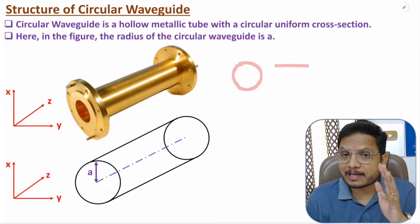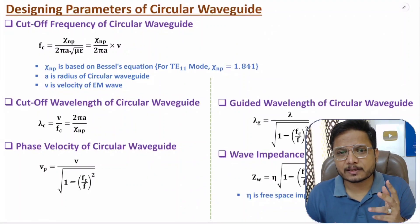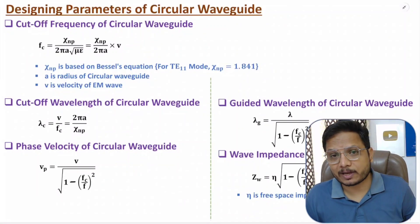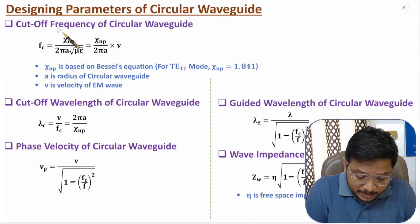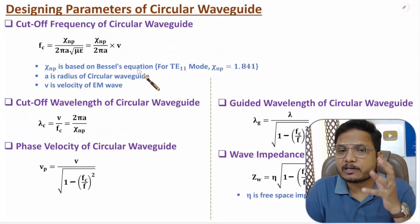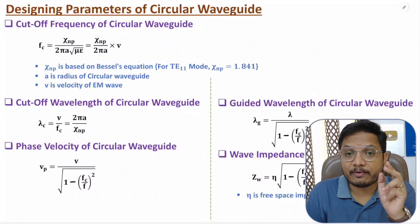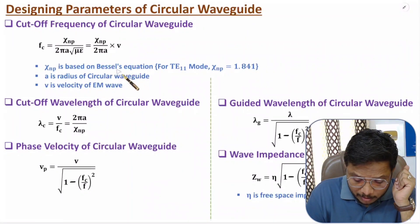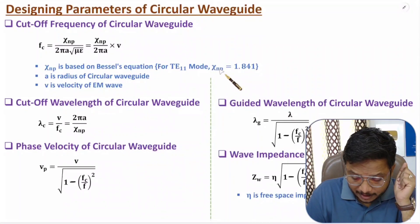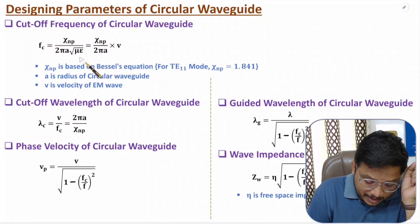Now I'll discuss designing parameters of circular waveguide. The first designing parameter is cutoff frequency: fc = xnp / (2πa√(με)). Here xnp is based on Bessel's equation — the Bessel function is complex, so you will be given a table from which you identify the value of xnp for different modes. For example, for TE11 mode, xnp = 1.841.